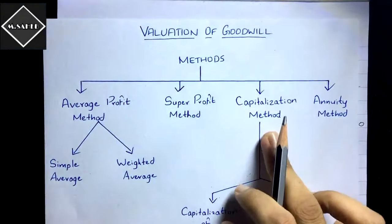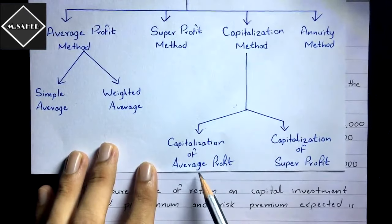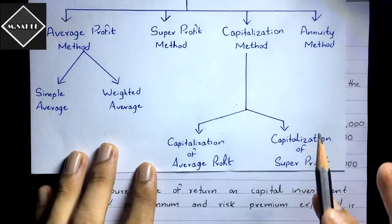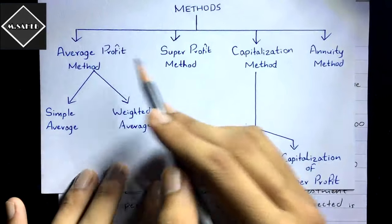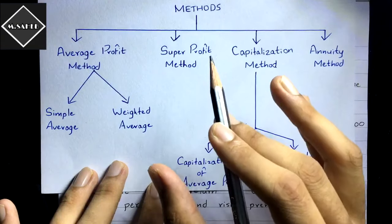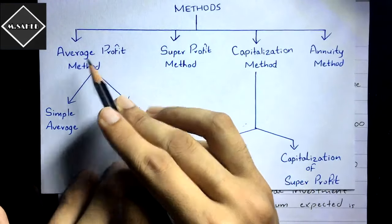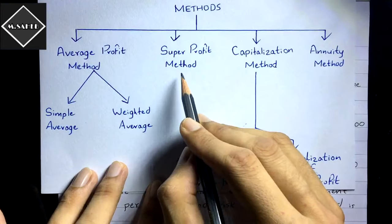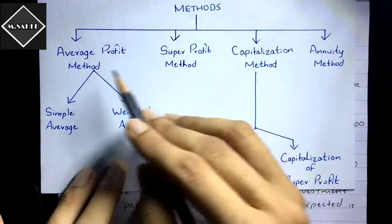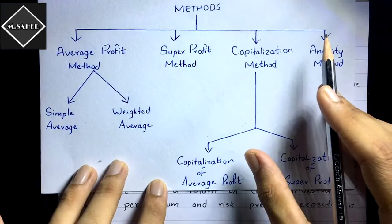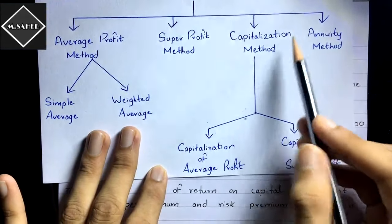In this video we are going to solve a problem with the capitalization method. The capitalization method can be classified into capitalization of average profit and capitalization of super profit. To understand it properly, you must know the average profit method as well as the super profit method. If you don't know those, please watch the previous videos where we solved problems on both methods.